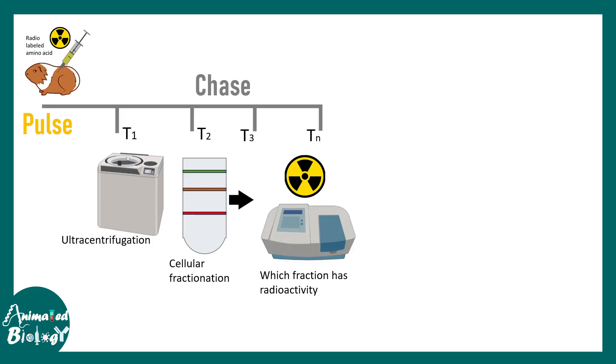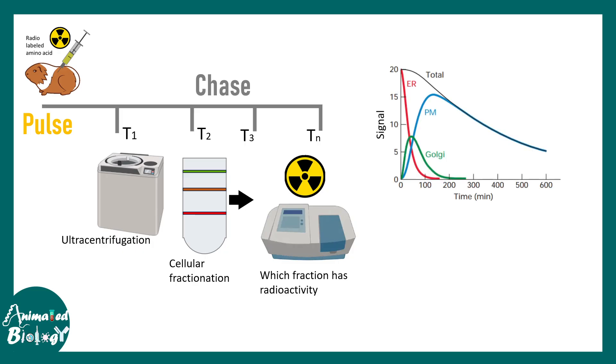That's what Palade did. If radioactivity appears in different locations in the cell at different time points, one can clearly understand the pathway of movement of these labelled proteins through the cellular organelles. Roughly, it was initially in the endoplasmic reticulum, then moved to the Golgi, and eventually would be in the membrane fraction, if it's a membrane protein.